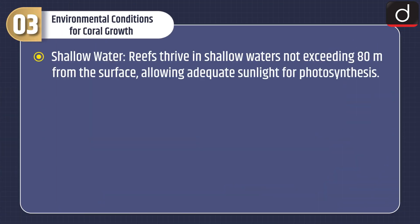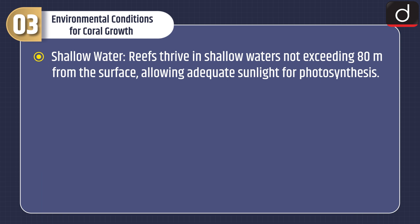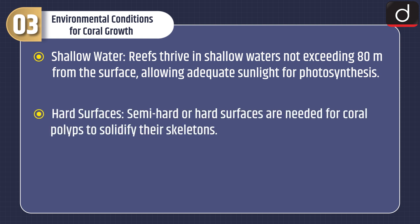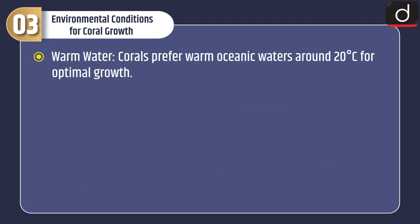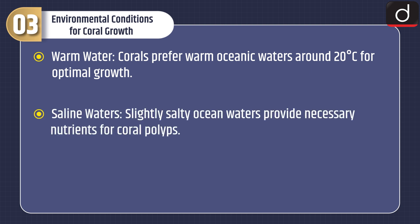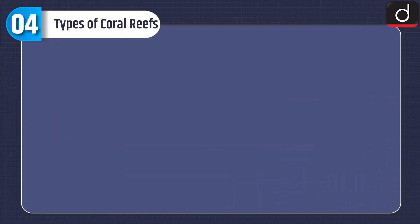Environmental conditions for coral growth include: shallow water — reefs thrive in waters not exceeding 80 meters from the surface, allowing adequate sunlight for photosynthesis; hard surfaces — semi-hard or hard surfaces are needed for coral polyps to solidify their skeletons; clear water — sediment-free water is essential for sunlight penetration; warm water — corals prefer around 20 degrees Celsius; and saline waters with nutrient-rich conditions supported by ocean waves.